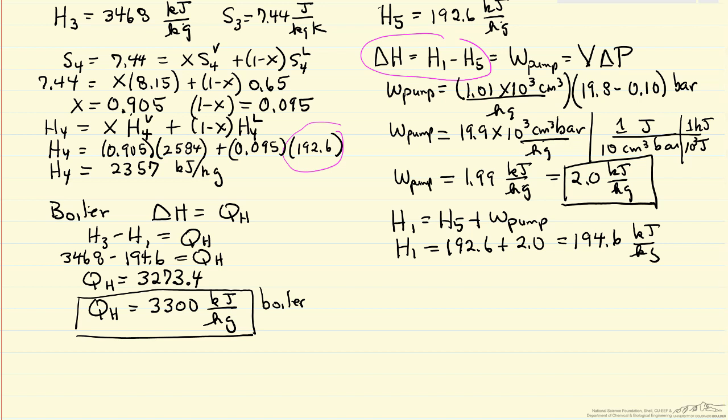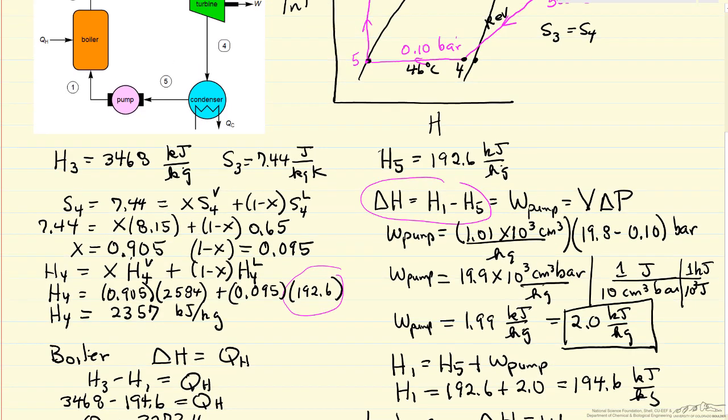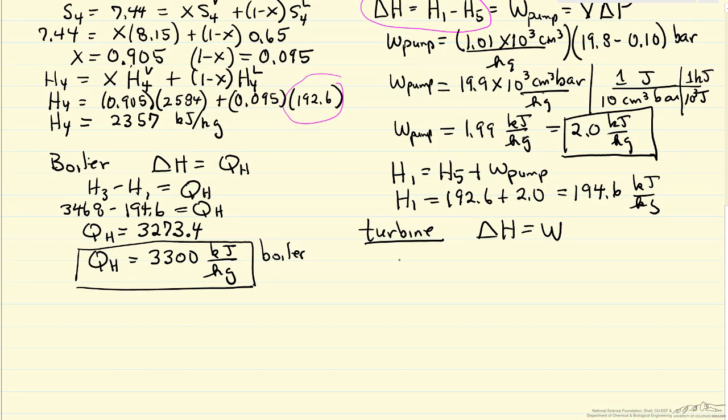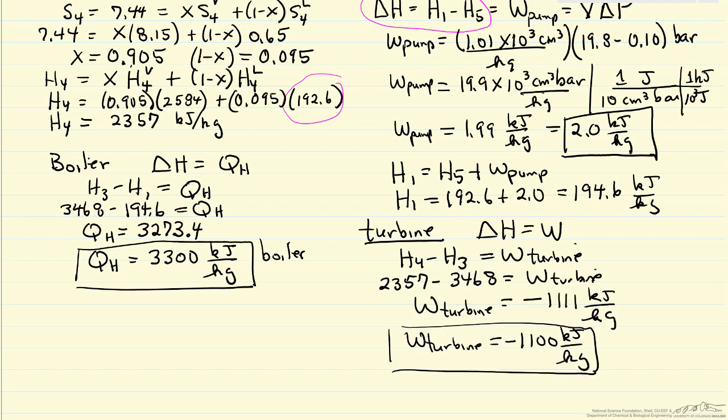Next, the turbine energy balance: ΔH = W for an adiabatic turbine. ΔH = H4 - H3. Since it's reversible, entropy in equals entropy out, which is how we calculated the values. So W_turbine = H4 - H3. Substituting the numbers gives W_turbine = -1100 kJ/kg to two significant figures.